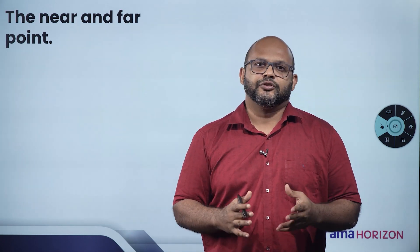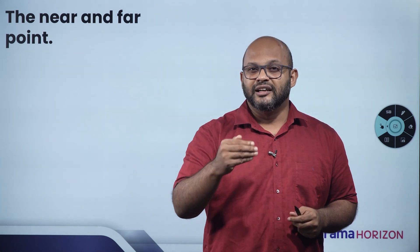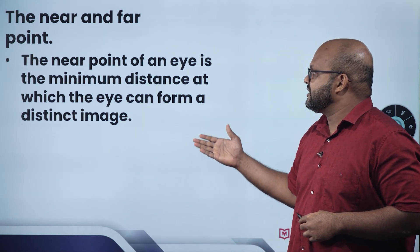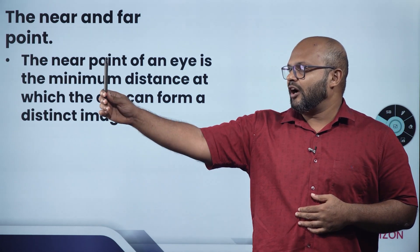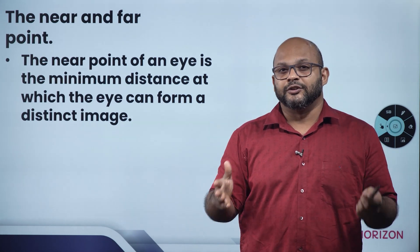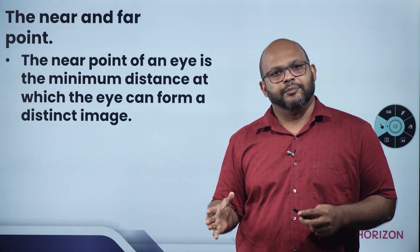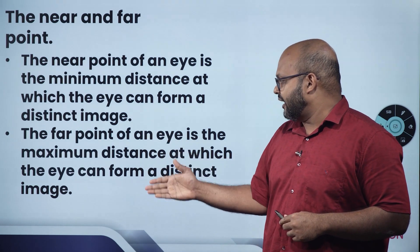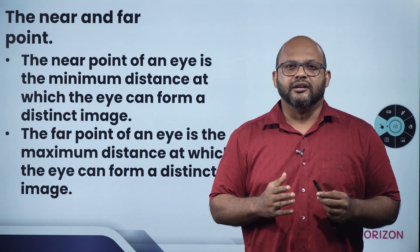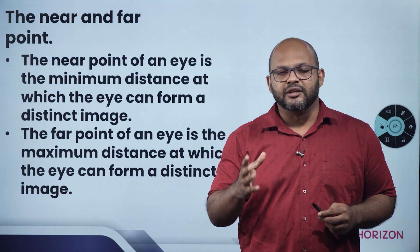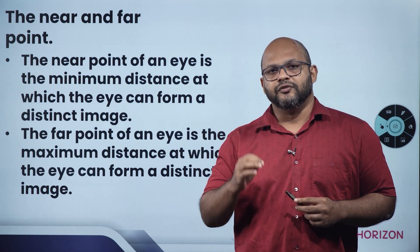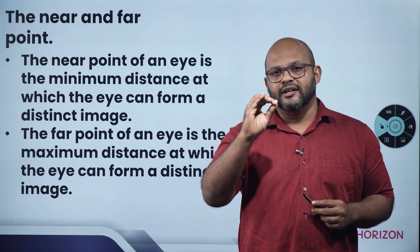To clearly see an object, the image must not be blurred. The near-point of the human eye is the minimum distance at which the eye can form a distinct image — approximately 25 cm for most healthy people. The far-point of the eye is the maximum distance at which the eye can form a distinct image.